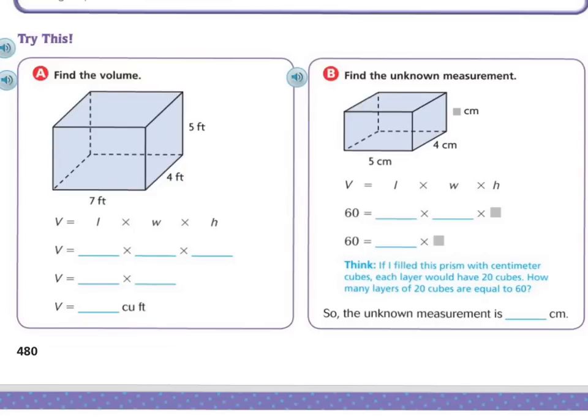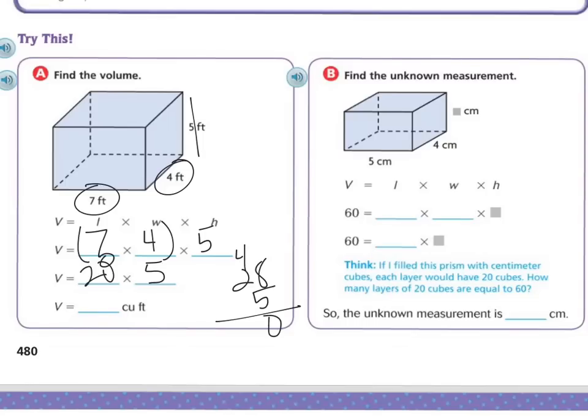Alright, let's continue finding the volume. So we have our length and our width. So we've got 7 times 4 times the height, which is 5 feet. So 7 times 4 is 28. And 28 times 5, so let's do that. 28 times 5. 8 times 5 is 40. Carry my 1. 2 times 5 is 10. Plus 4 is 14. So I have 140 cubic inches.